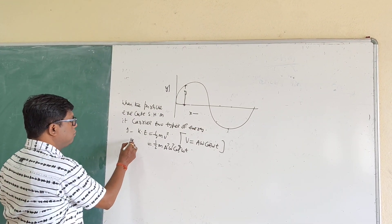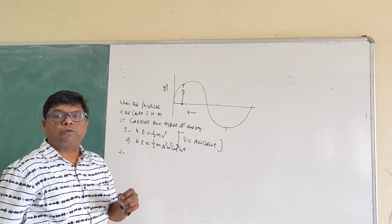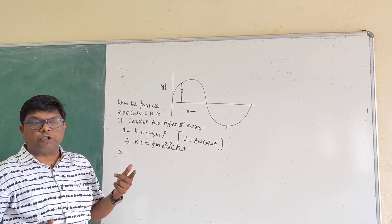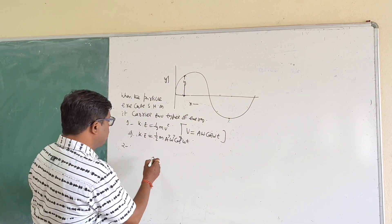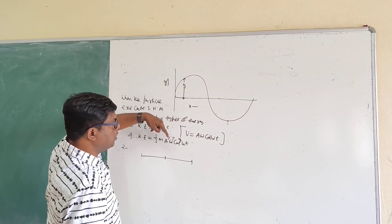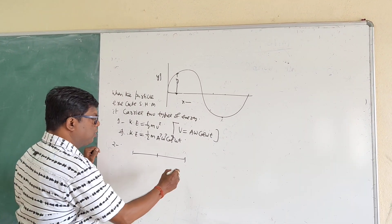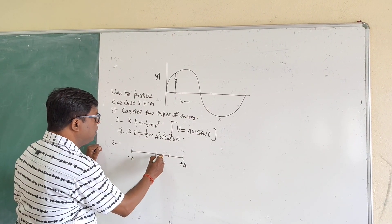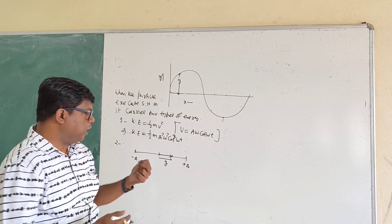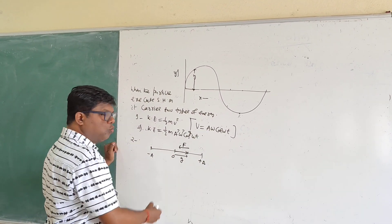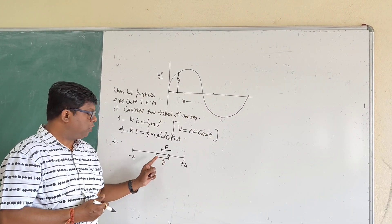Next, we calculate the potential energy of the particle executing SHM. Suppose the particle has a small displacement y from the mean position. The restoring force always tries to oppose the displacement from the mean position — F = −ky.